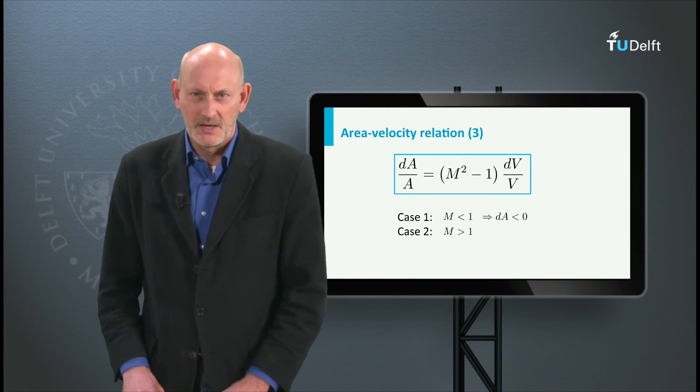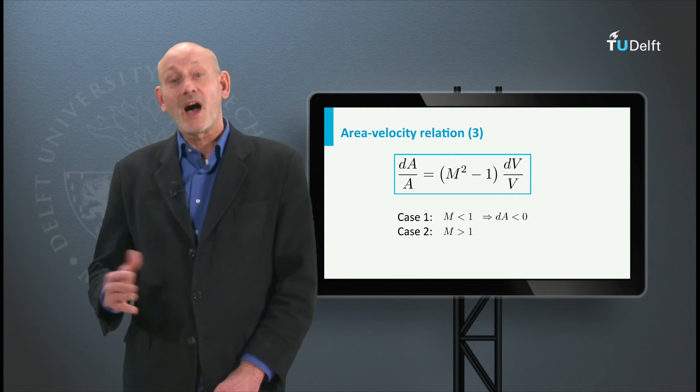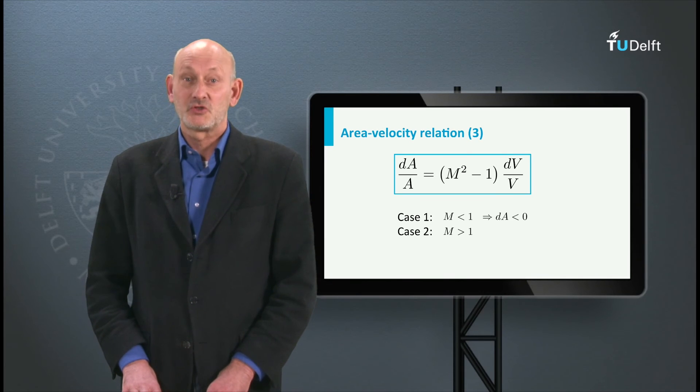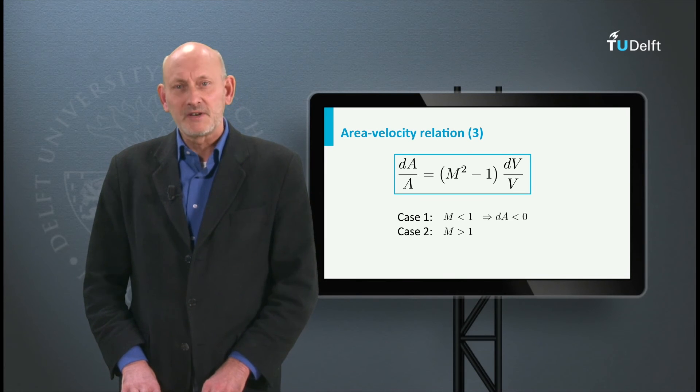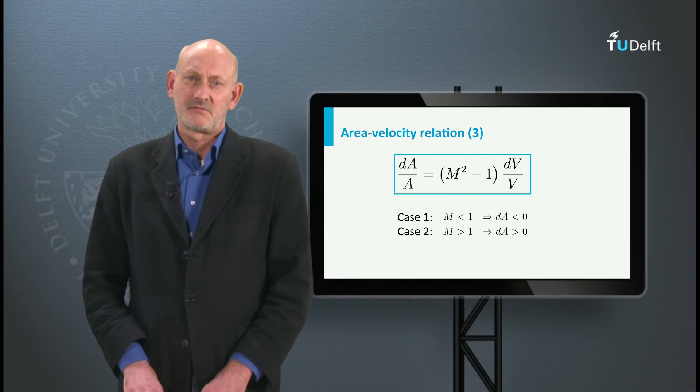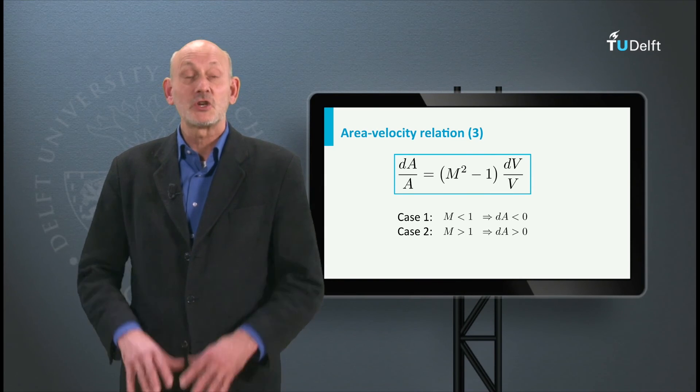And now case B. The Mach number is higher than 1. Now M squared minus 1 is positive, so to further increase the speed also the area of the channel should increase. The flow should be given space to expand.